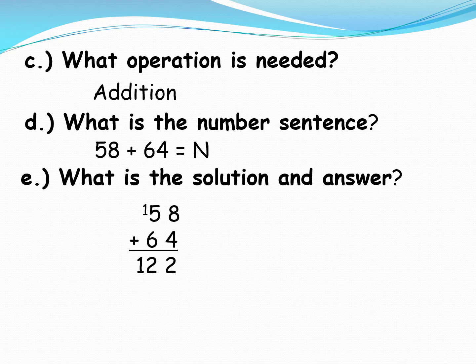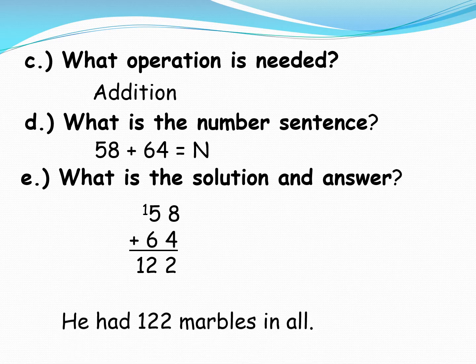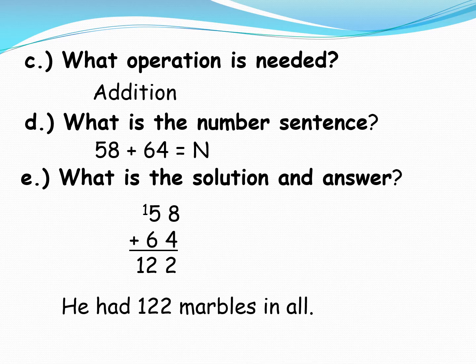We have 58 plus 64. So 8 plus 4 is equal to 12. Bring down 2, regroup 1. 1 plus 5 plus 6 is equal to 12. We have 122. So the answer is, he had 122 marbles in all.